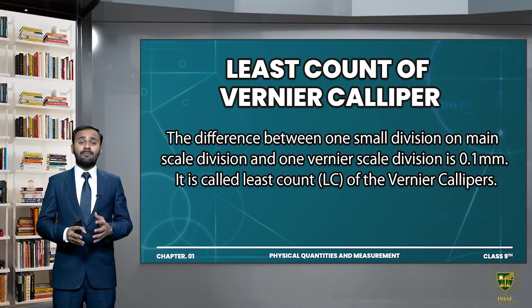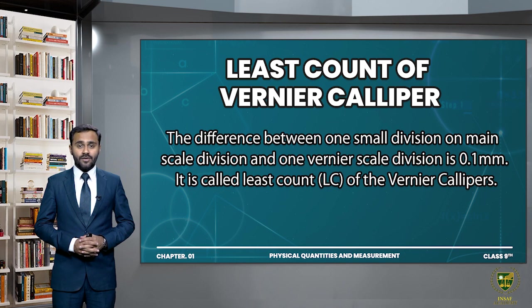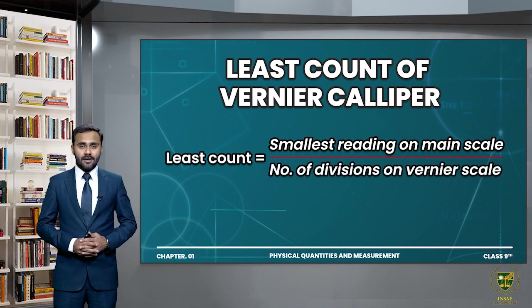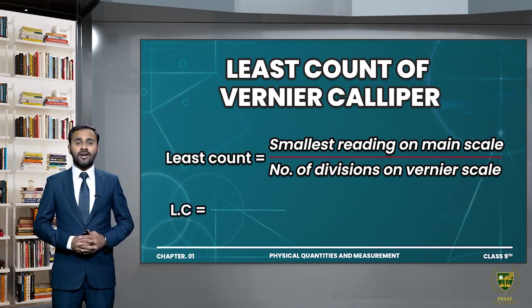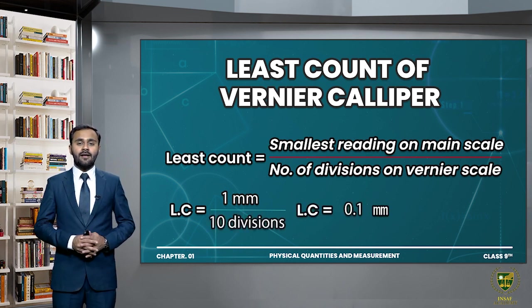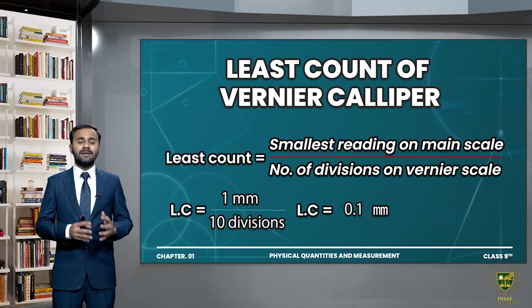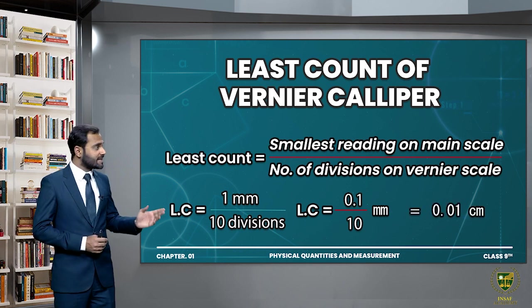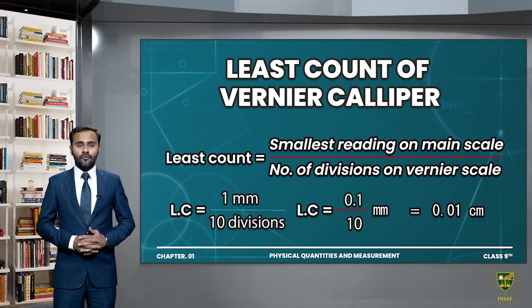You can also find this least count mathematically by using the formula: least count equals smallest reading on main scale divided by number of divisions on Vernier scale. The smallest reading on the main scale is 1 millimeter, divided by the number of divisions on the Vernier scale, which is 10. So 1 mm divided by 10 equals 0.1 mm. You can also convert this value to centimeters by dividing by 10: 0.1 divided by 10 equals 0.01 centimeter. So this is the least count of Vernier Caliper.